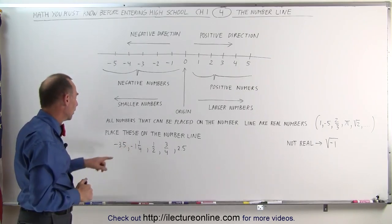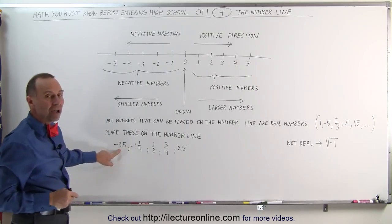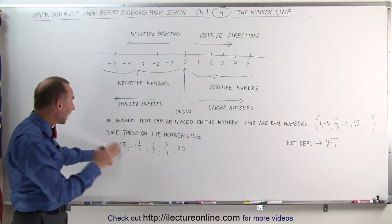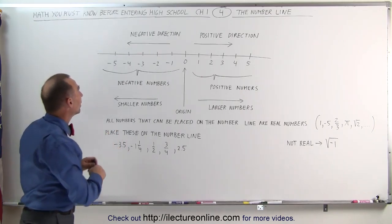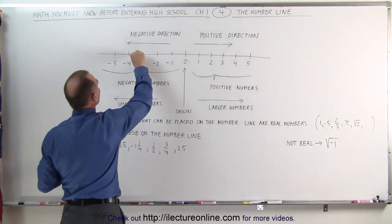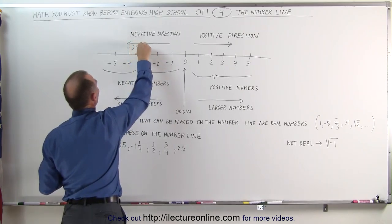But let's go to these numbers right here. The number negative 3.5, that means it's halfway between negative 3 and negative 4, that means it must be right here. This is the number minus 3.5.